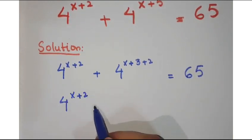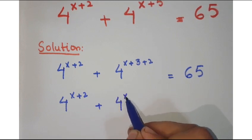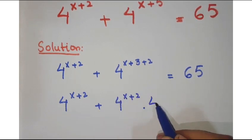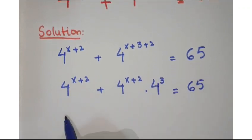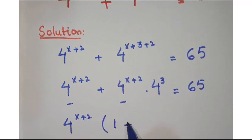Further, you can write it as 4 to the power x plus 2, then 4 to the power x plus 2 into 4 to the power 3 equals 65. Taking out these two terms as they are common.